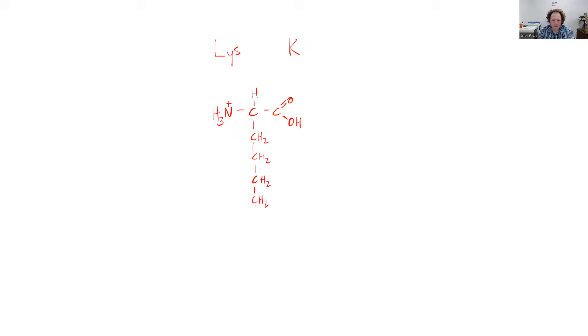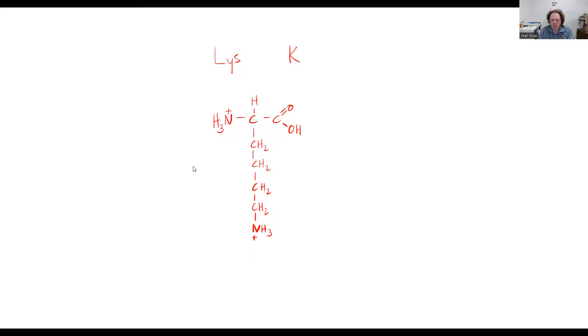and then NH3+. The pKa values for lysine, or the ionizable groups of lysine are the N-terminus, the C-terminus, and the R-group.